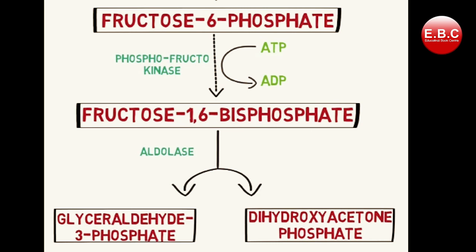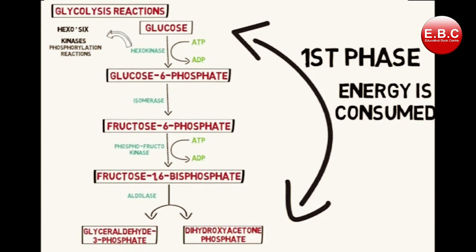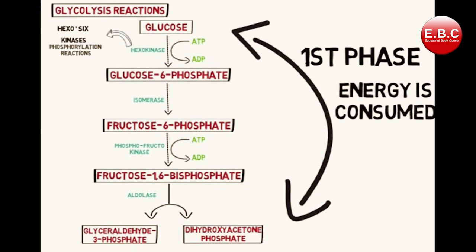So altogether, two ATPs are now utilized in the reaction. Next, fructose-1,6-bisphosphate is split into two molecules: glyceraldehyde-3-phosphate and dihydroxyacetone phosphate — both are three-carbon compounds. The enzyme that catalyzes this reaction is aldolase. These reactions compose the first phase of glycolysis, and as you can see, energy is actually utilized in this process in the form of two ATPs.